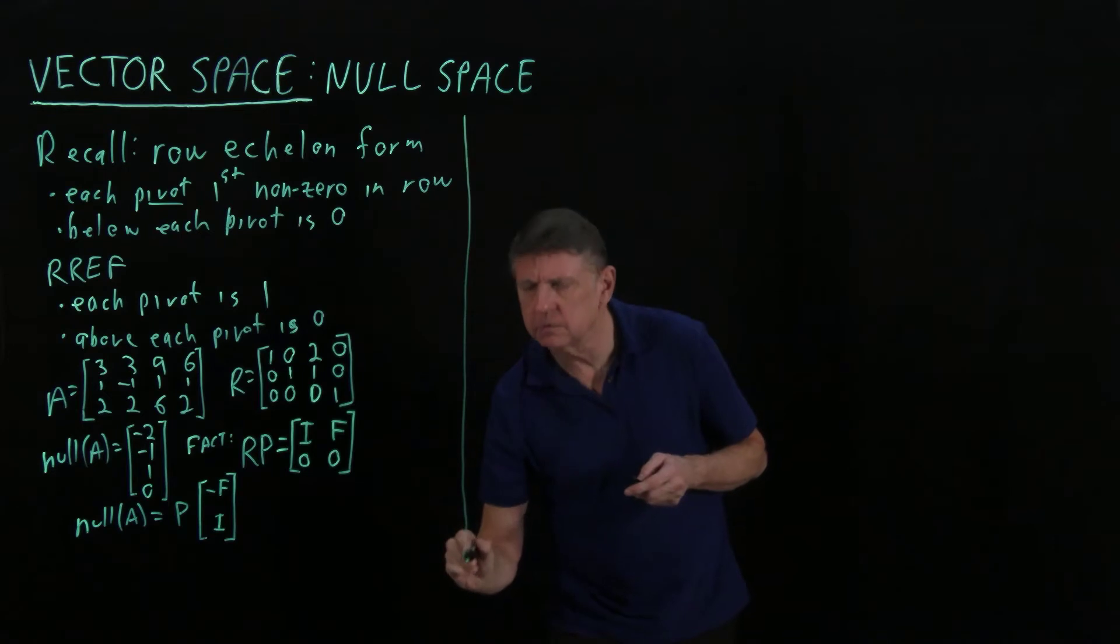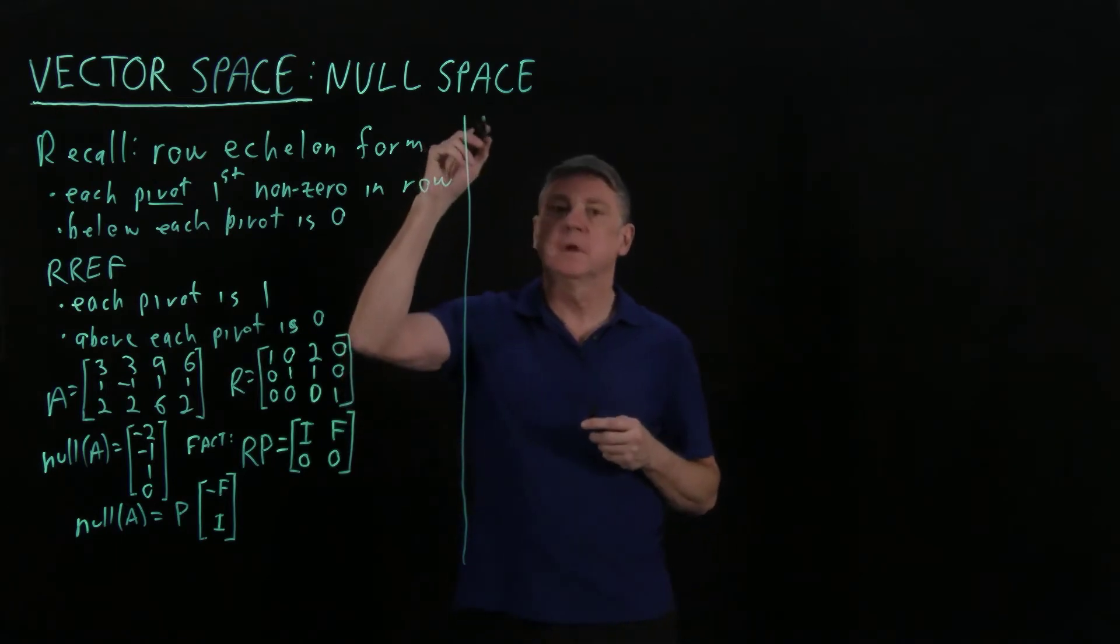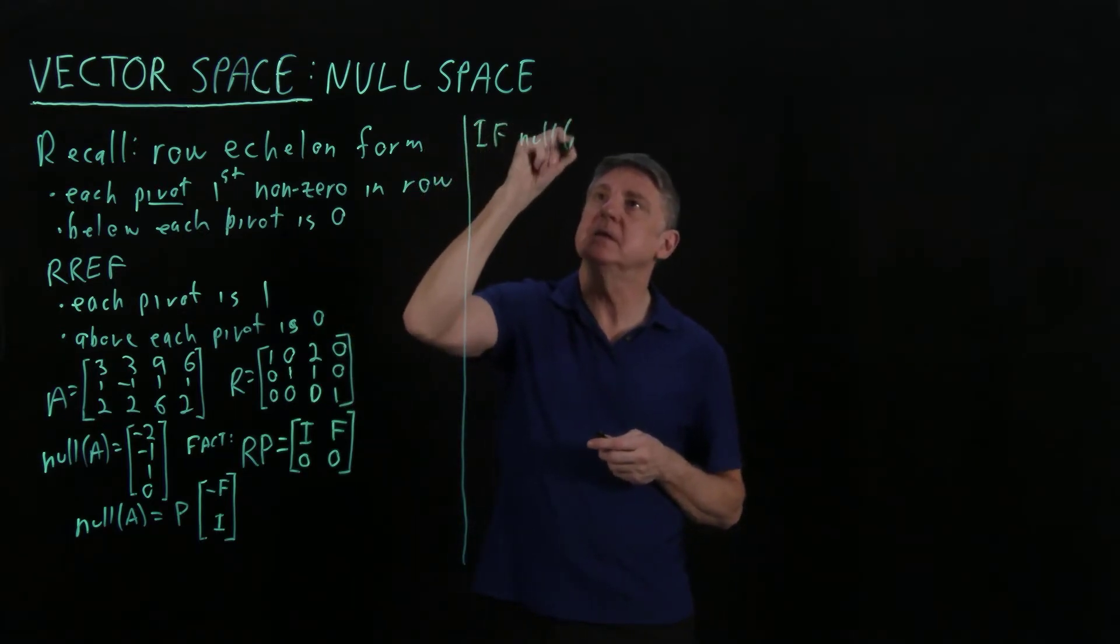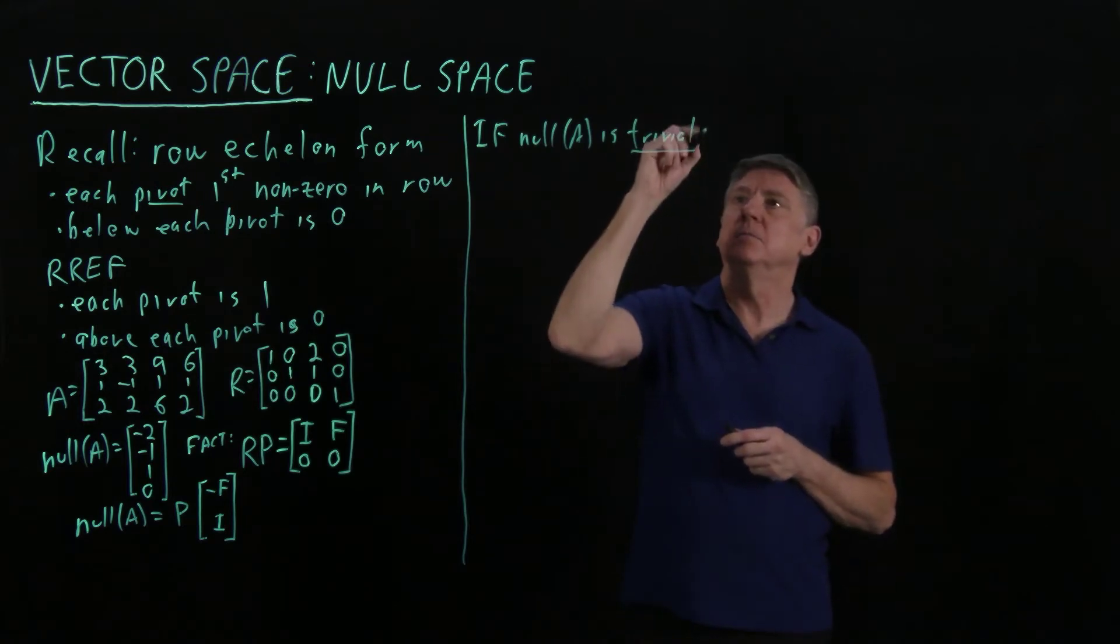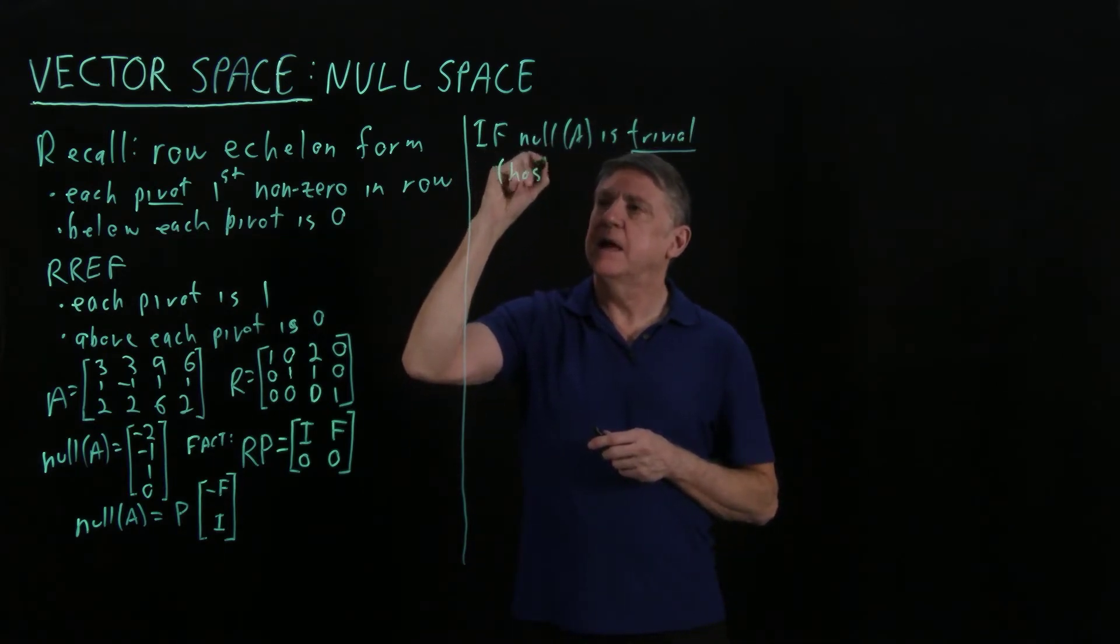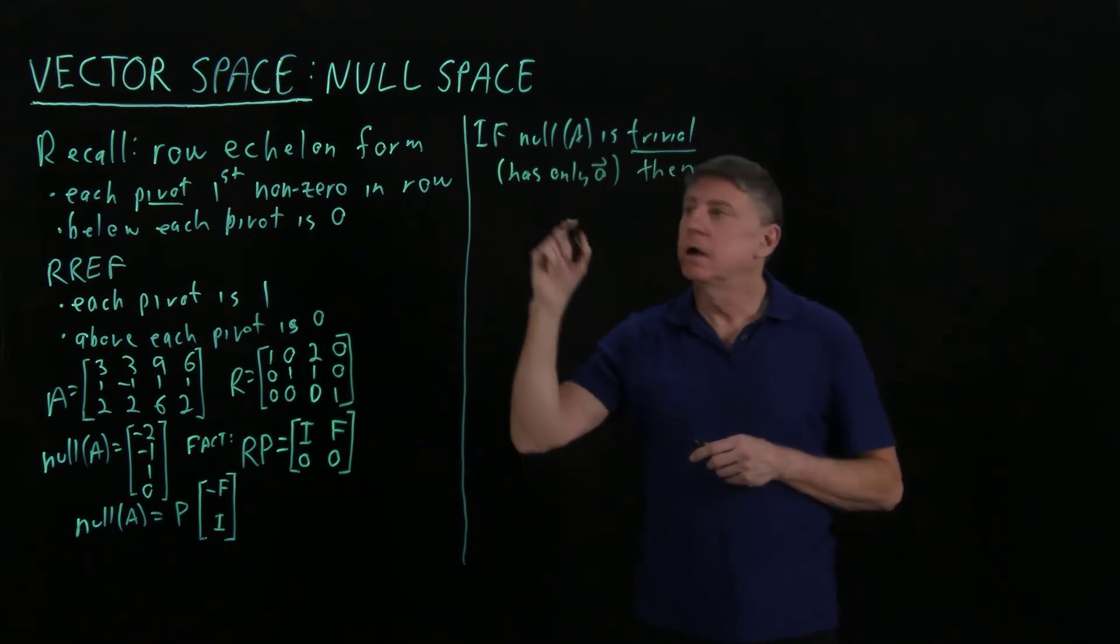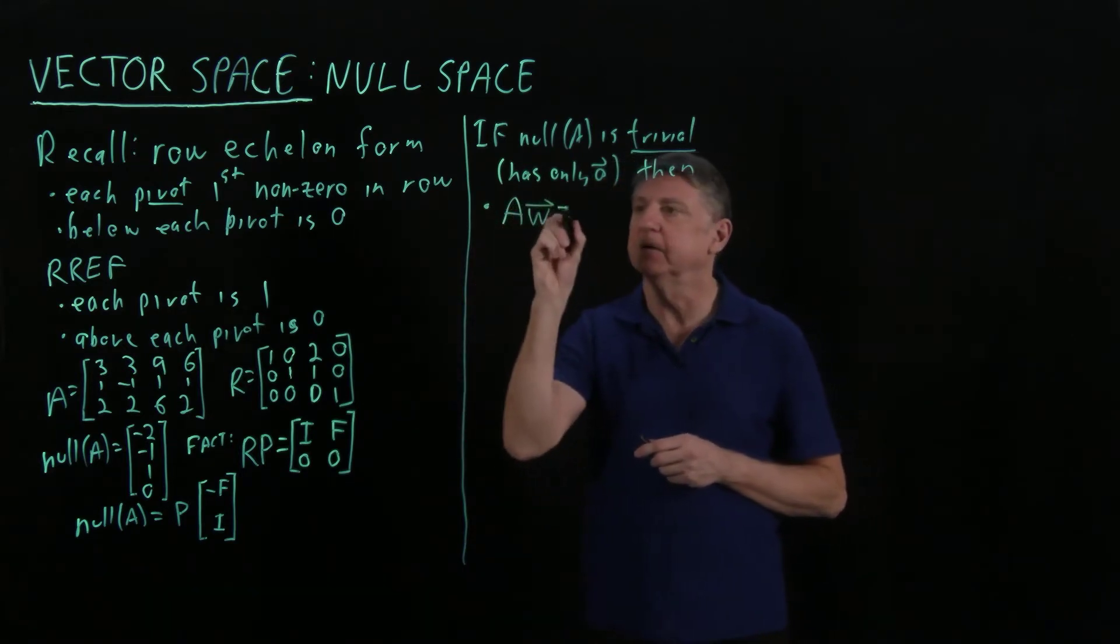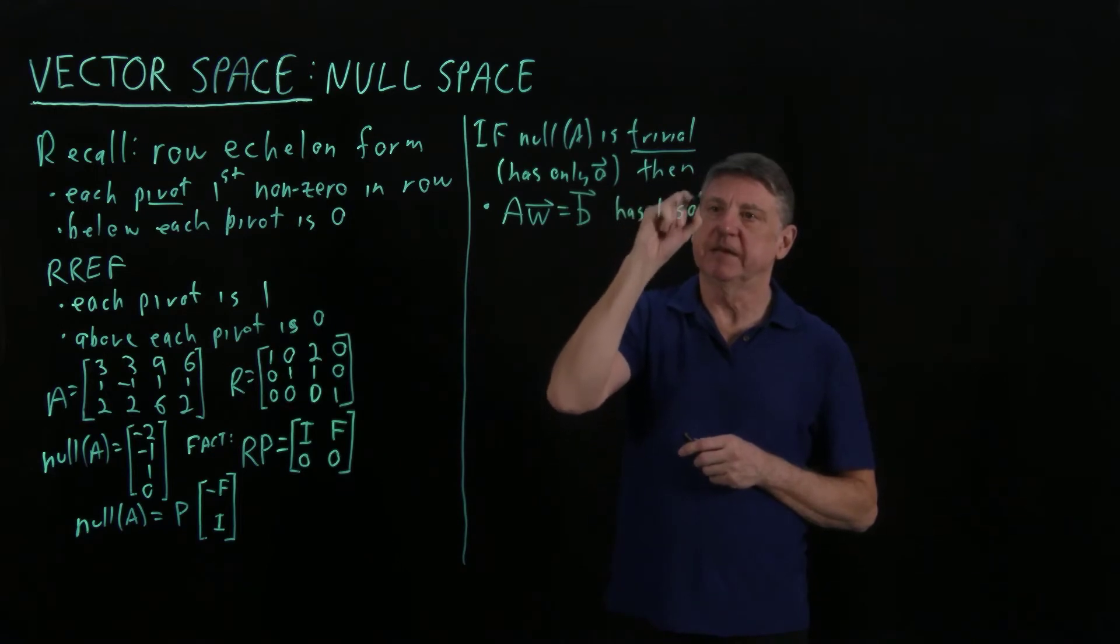Now let's consider some properties. Let's think about the null space of a matrix. If the null space of a matrix is trivial—by trivial I mean it has only the 0 vector in it—then it will turn out that the equation A times some unknown weight vector W equals some constraint vector has one solution. It has a unique solution.